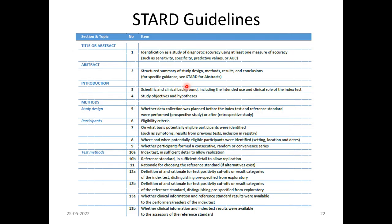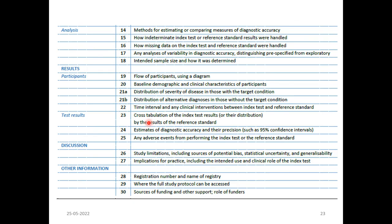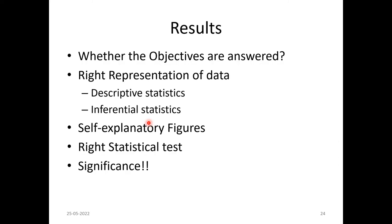One such guideline is the STARD guidelines, commonly used for diagnostic studies. If you look at the individual sections, this is a checklist-based approach where you check individual parameters present in the study. For each item, you assess whether it is present and whether it is satisfactory — answering these questions for your journal article based on the checklist from the EQUATOR network.